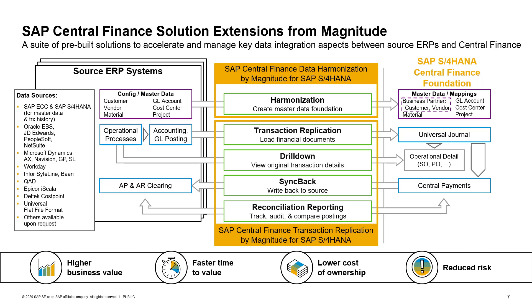Together, the SAP Central Finance Data Harmonization and Transaction Replication applications by Magnitude provide an intelligent, software-based approach to data integration. This helps you attain higher business value in your Central Finance deployment, accelerate your time to value, lower your initial and ongoing integration costs, and reduce the risk associated with connecting your source systems with Central Finance.